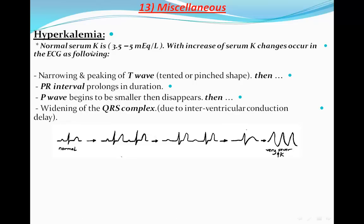Hyperkalemia: normal serum potassium is about 3.5 to 5 milliequivalents per liter. The increase of serum potassium will produce changes in the ECG. The first change will be narrowing and peaking of the T wave. This is a normal complex, and then it will start with narrowing of the T wave.